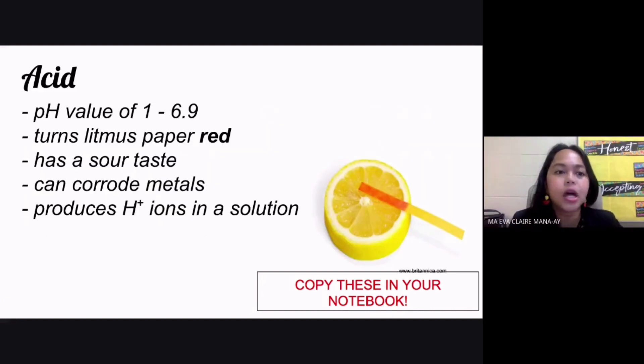Now, these are some common characteristics of your acid. First one, pH value is from 1 until 6.9. Turns litmus paper red. It has a sour taste. It can also corrode metals. And whenever you put it in a solution, it's going to produce your hydrogen ions. This video will be found in your classroom later, so you can just put all these notes in your notebook.